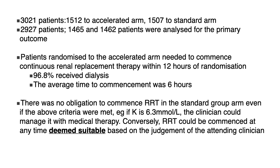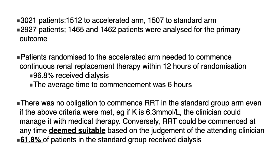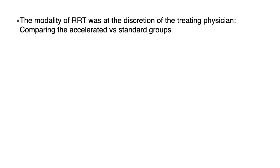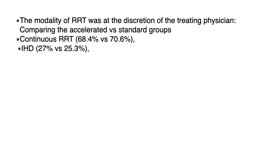For example, if potassium was 6.3, the clinician could manage it with medical therapy if deemed adequate. Renal replacement therapy could be commenced at any time based on the attending clinician's judgment. 61.8% of patients in the standard group received dialysis. The modality of RRT was at the treating physician's discretion: CRRT was used in 68.4% in the accelerated group and 70.6% in the standard group, intermittent hemodialysis in around 25%, and SLED in around 4%.